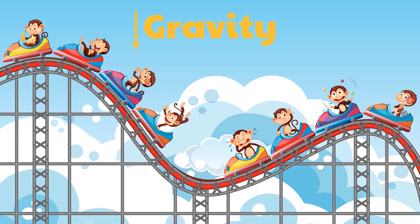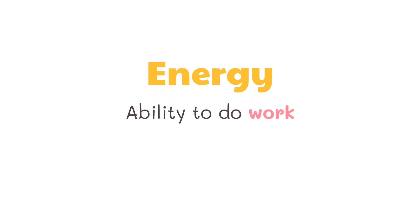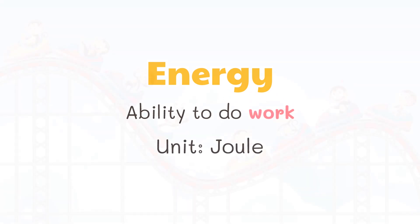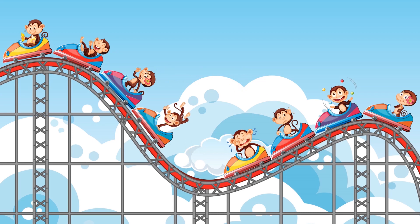This involves two types of energy: potential energy and kinetic energy. Energy is the ability to do work, and energy and work have the same unit, which is the joule. On a roller coaster, energy changes from potential to kinetic energy and back again many times over the course of a ride.